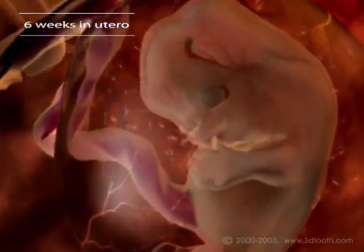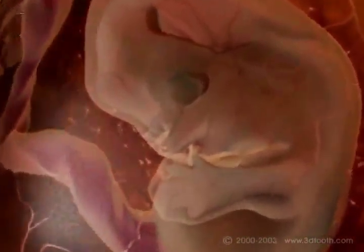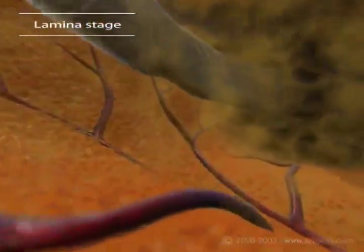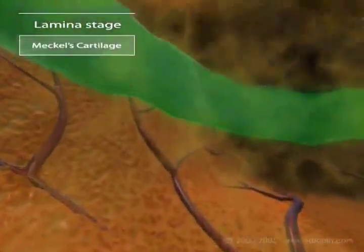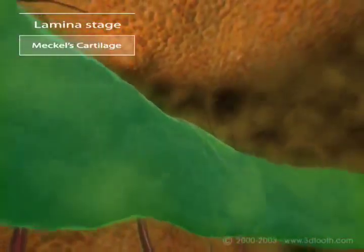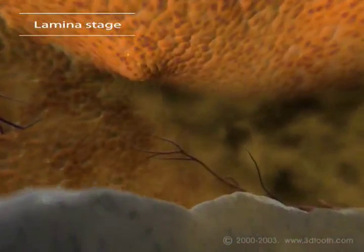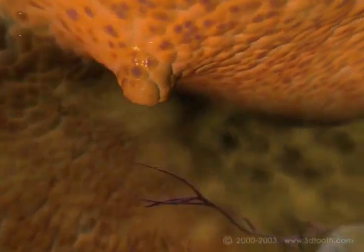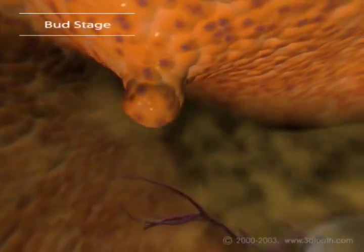As we get closer, we can see other key players in the formation of our dentition. Meckel's cartilage provides support for the developing tissues, and the blood vessels that help shape the embryonic teeth are present.